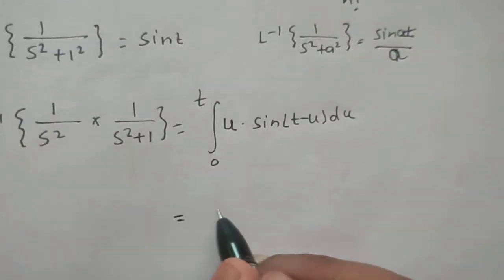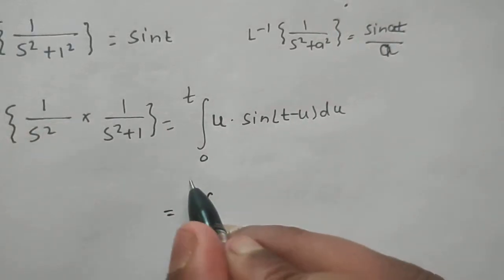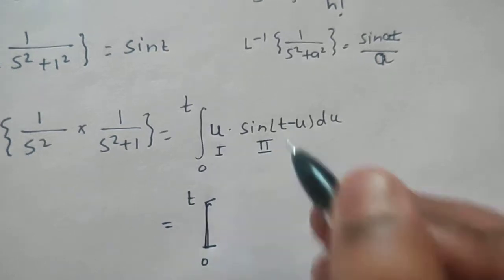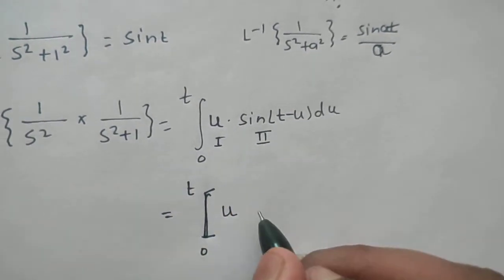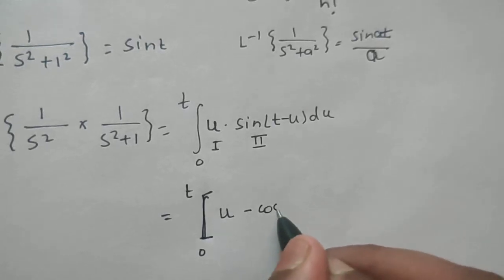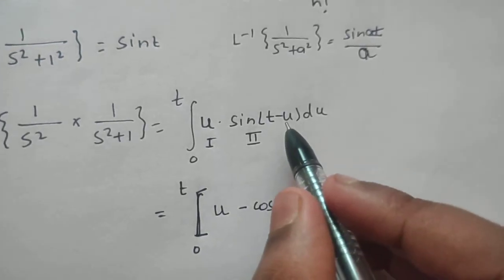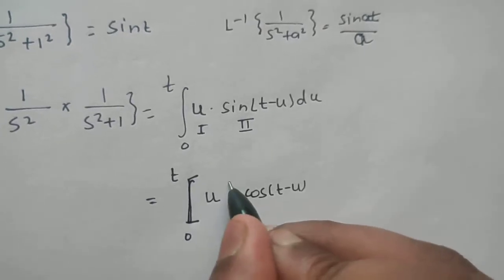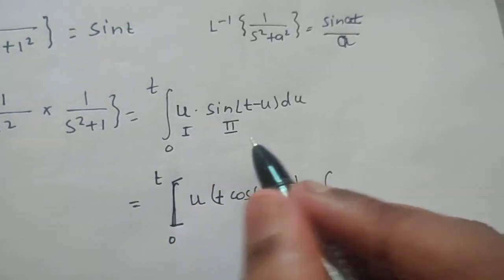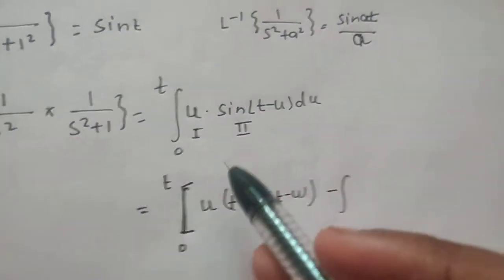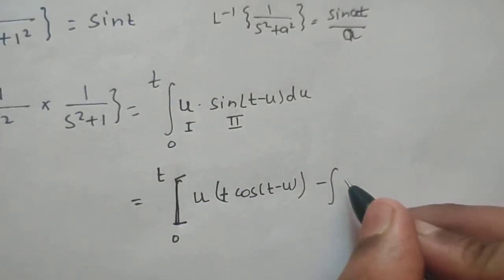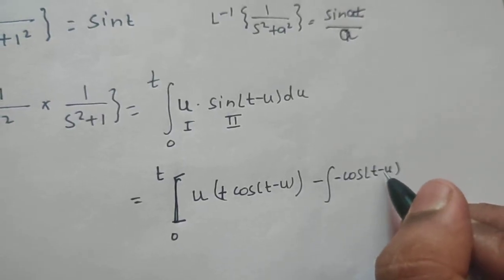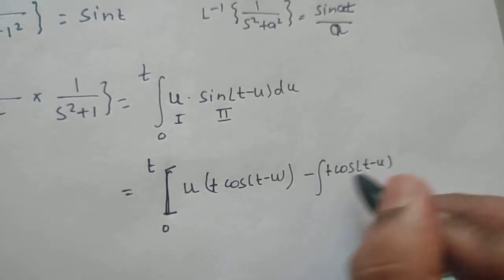Now, integrating by parts from 0 to t: taking u as the first function and sin(t minus u) as the second. The integral of sin(t minus u) is minus cos(t minus u) — dividing by the derivative of (minus u), which is minus 1, giving plus cos(t minus u). Then minus the integral of the derivative of u times cos(t minus u), and the integral of cos(t minus u) gives minus sin(t minus u) divided by minus 1, making it plus sin(t minus u).